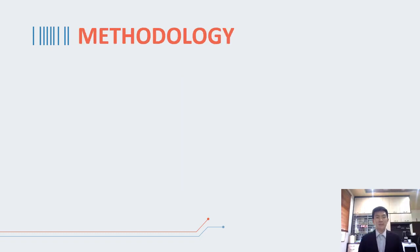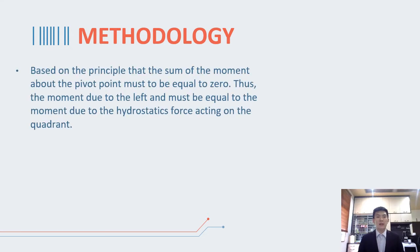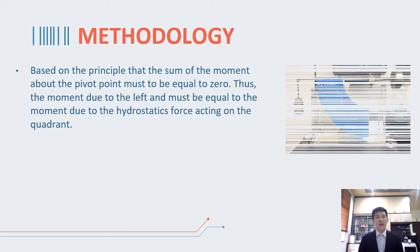The methodology of this experiment is based on the principle that the sum of the moments about the pivot must be equal to zero. Thus, the moment due to the weight or the mass applied to the left must be equal to the moment due to the hydrostatic force acting on the vertical rectangular quadrant.